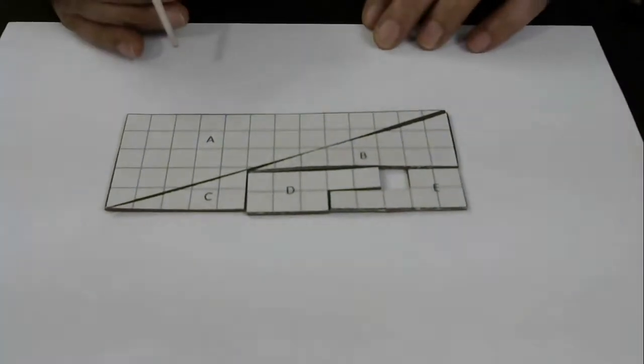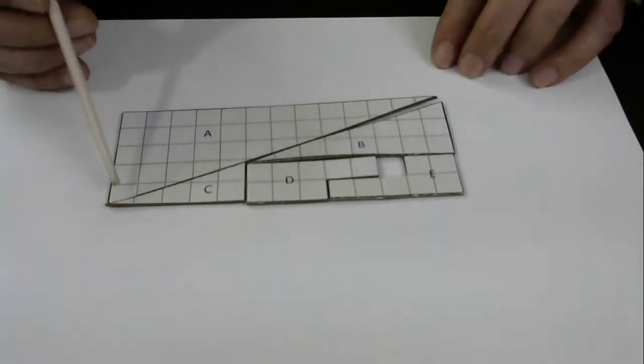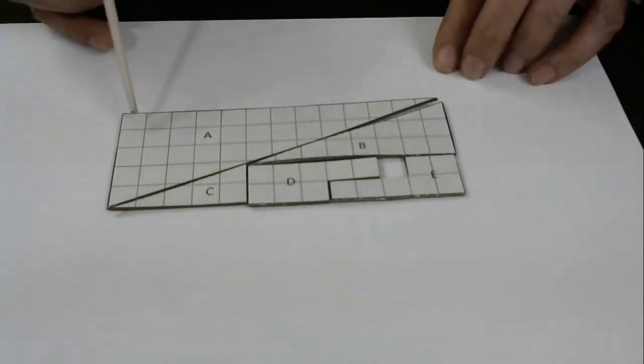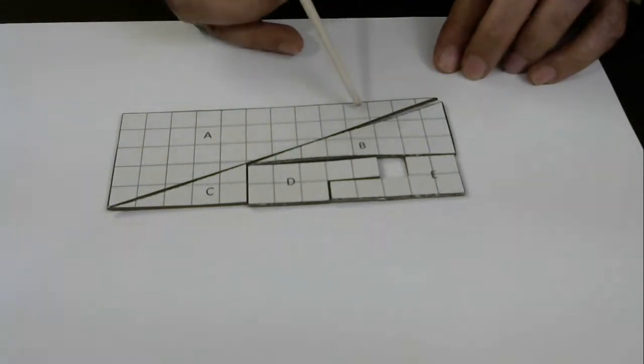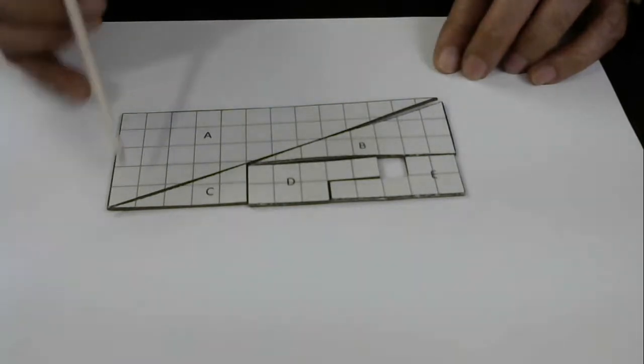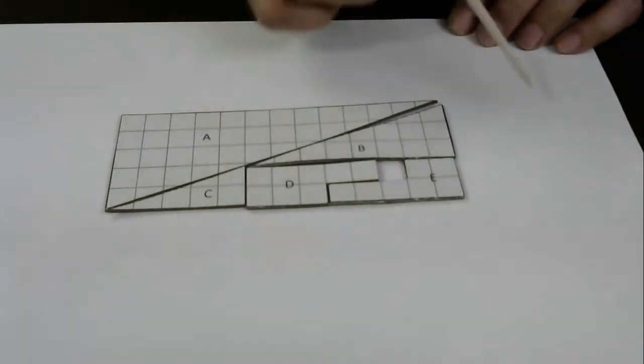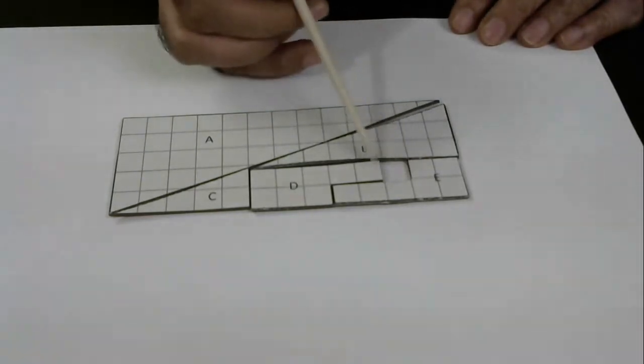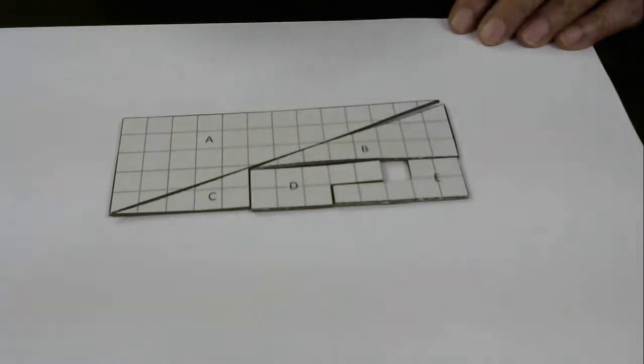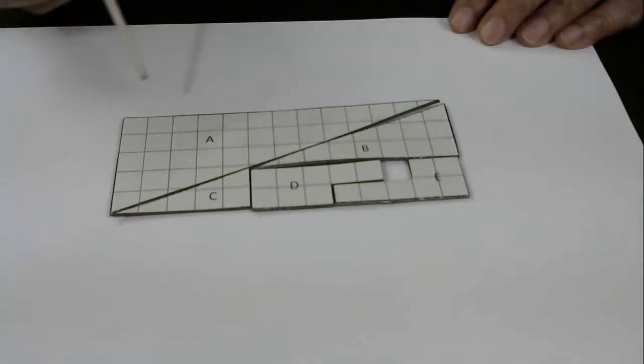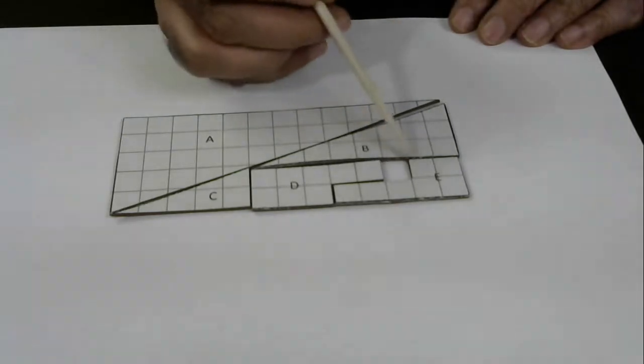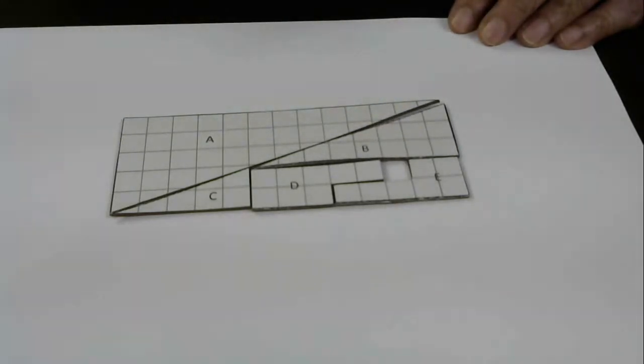Now we have this rectangle again. Let's see - 1, 2, 3, 4, 5. Height is 5 and the width 1, 2, 3, 4, 5, 6, 7, 8, 9, 10, 11, 12, 13. So 5 times 13, the width and height of this rectangle is still the same, but we see one extra square which has come from somewhere. That means this rectangle's area is actually 65 pieces plus one extra space. How did that magic happen?